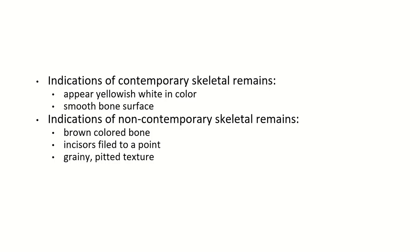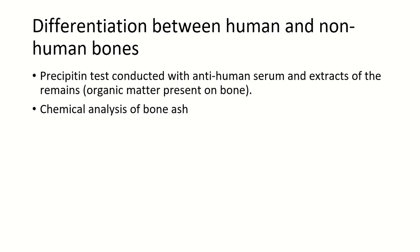Indications of contemporary skeletal remains — belonging to the same time period: the skeletal remains appear yellowish-white in color and the bone surface will be smooth. Indications of non-contemporary skeletal remains — very old ones: brown-colored bones, incisors filed to a point, and grainy or pitted texture. To differentiate between human and non-human bones: the precipitating test and chemical analysis of bone ash are used.